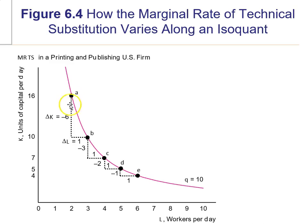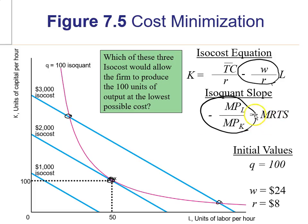At point A, if you're willing to give up six machines for one more worker, the worker is more productive — six times as productive. So MRTS equals six at point A means the marginal productivity of labor is six times the marginal productivity of capital. That's where we get that MRTS is this ratio of marginal products. To recap, the cost-minimizing point — where you choose the lowest isocost curve to produce 100 units of output — is the tangency where the slope of the isocost, negative W over R, equals the ratio of marginal products, MPL over MPK.